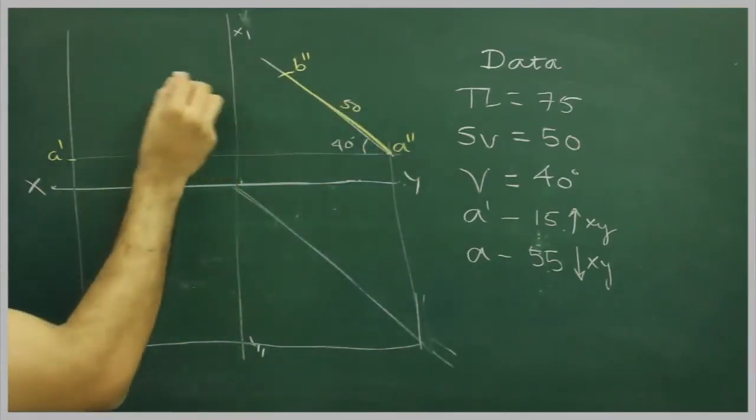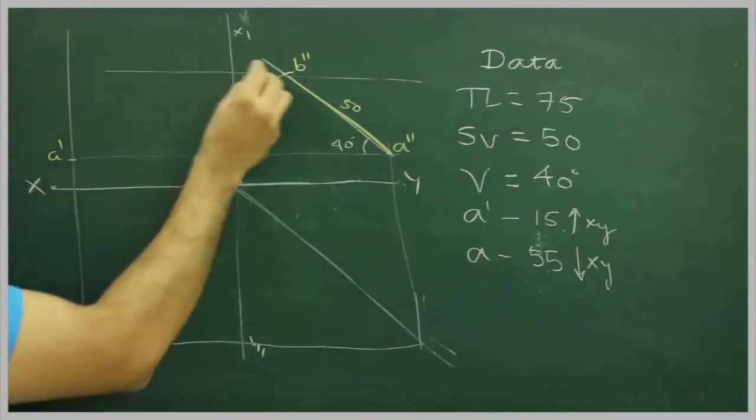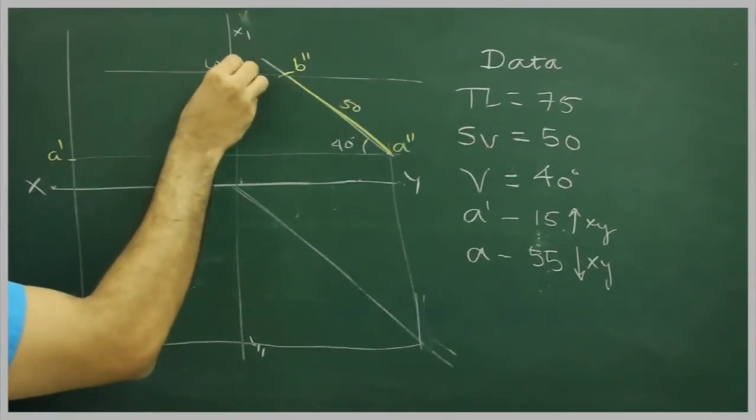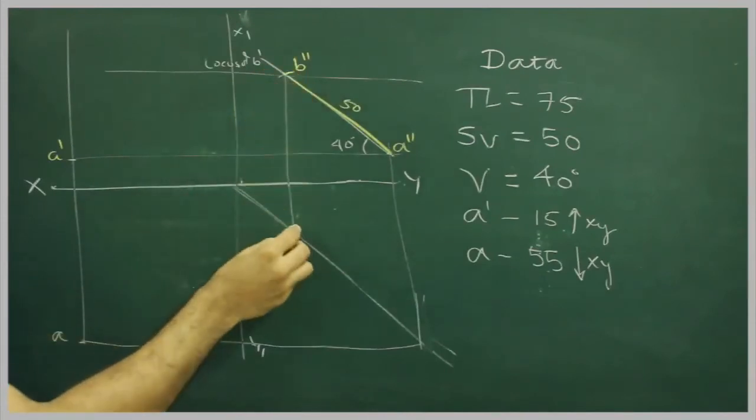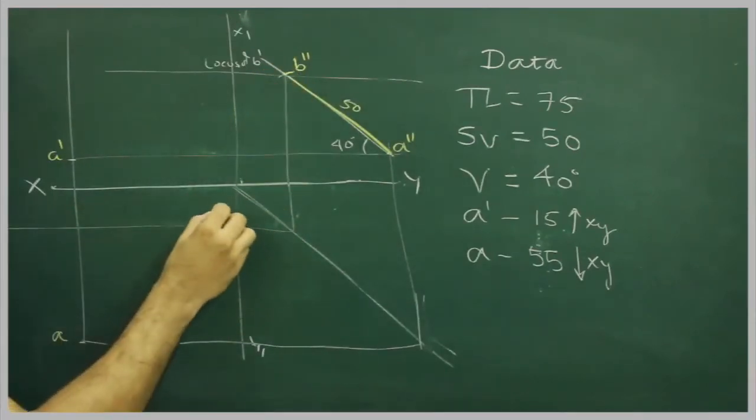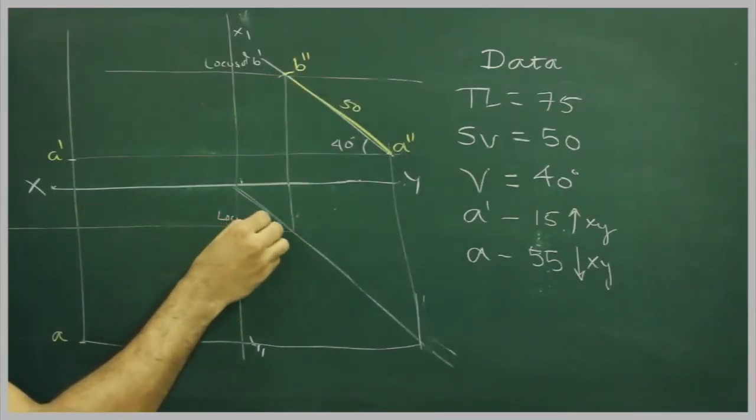Now I can draw locus of B dash. This would be locus of B dash, and I will extend this down and I will draw it here. So this would be locus of B.